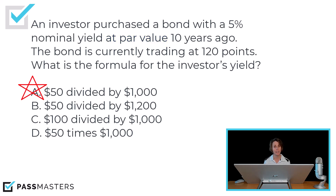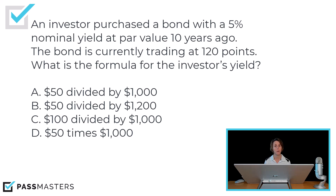Be careful — don't get tricked. Par value on a corporate bond is $1,000. So $50 divided by $1,000 is 5%. The investor's yield is equal to the nominal yield because it was purchased at par.